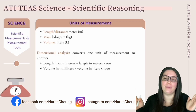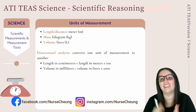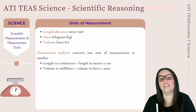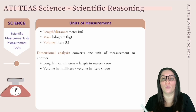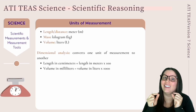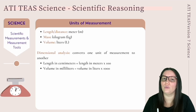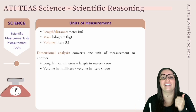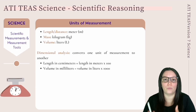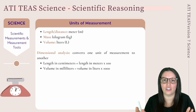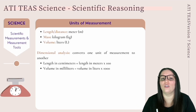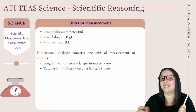We'll start with the very basics of scientific measurements — understanding units of measurement. Scientists utilize the metric system to measure and record their findings. In healthcare we use this a lot; we don't use pounds and ounces, we use kilograms and milliliters. Measurements for length and distance use meters, mass uses grams, and volume uses liters.